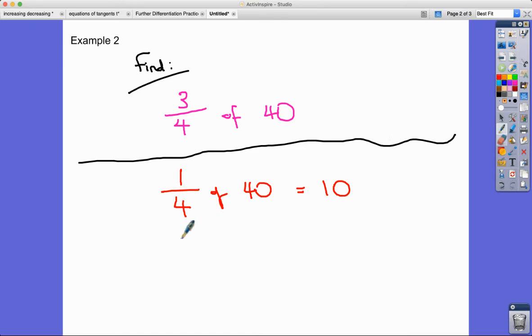That's going to lead me nicely to look at what 3/4 of 40 is. So 3/4 of 40 is going to be 3 times that amount, because 3/4 is 3 times bigger than 1/4. 10 times 3 is an answer of 30.